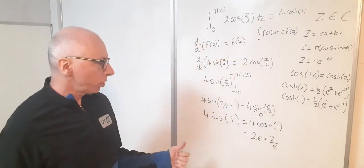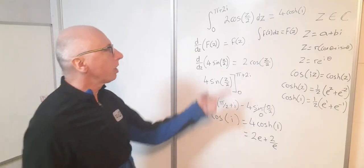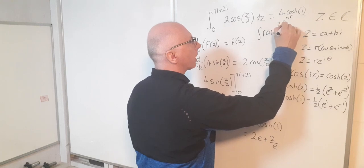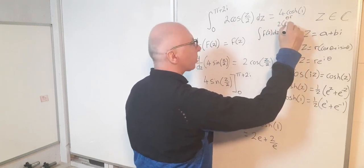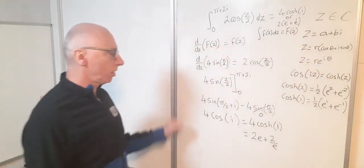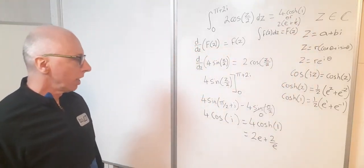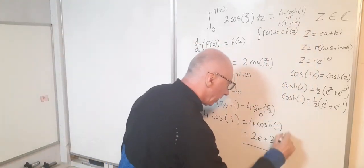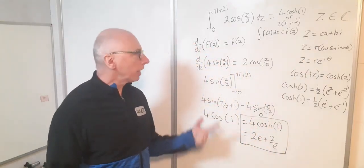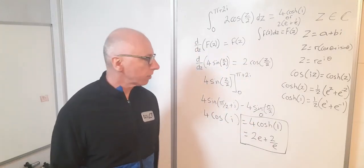Now that would also be a satisfactory result. So I could have that or 2e plus 1 over e. That would also be a result for my integration. So that I'm going to declare as my answers. They are both equivalent and that will work for my integral as a result. Thanks for watching.